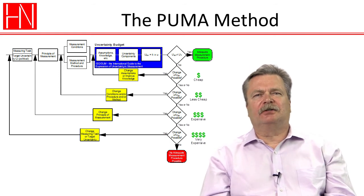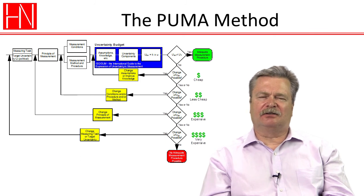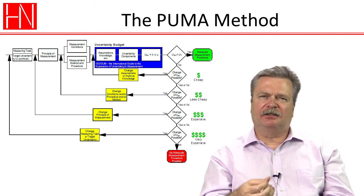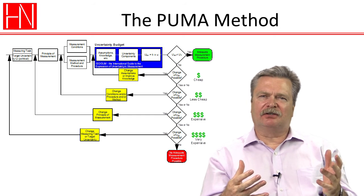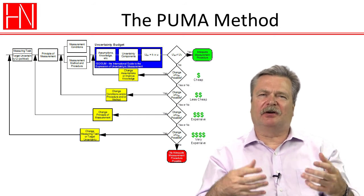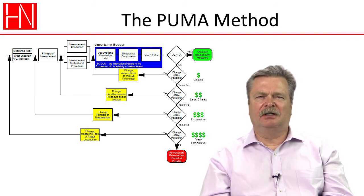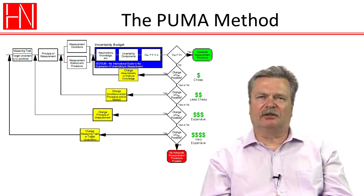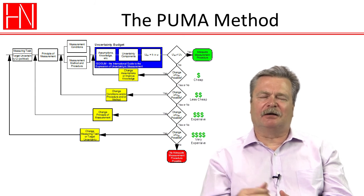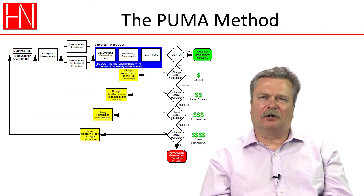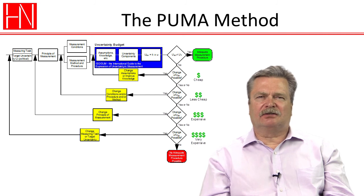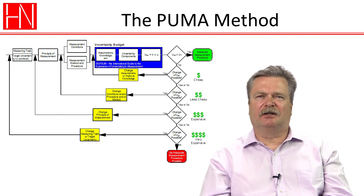And then finally we talked about how we can use that PUMA method in sort of a predictive way of estimating the uncertainty of a measuring process as we are defining and designing the measuring process so we can predict what the uncertainty of measurements will be before we've even bought the measuring equipment and before we have installed it wherever we are going to make the measurements, whether it is in a laboratory or on a shop floor. And so those are the strengths of the PUMA method and how it is usually a very significant work saver.